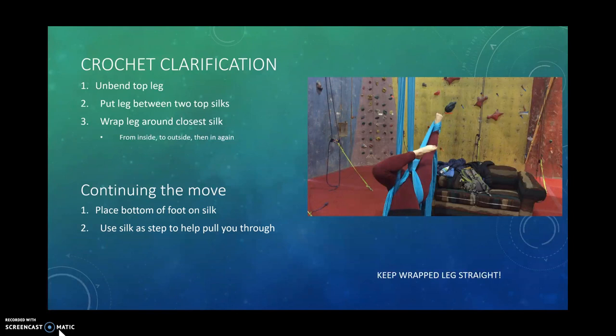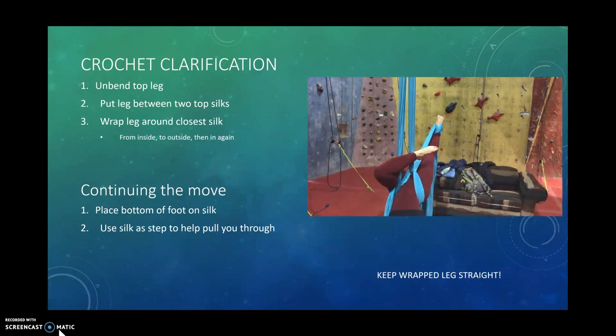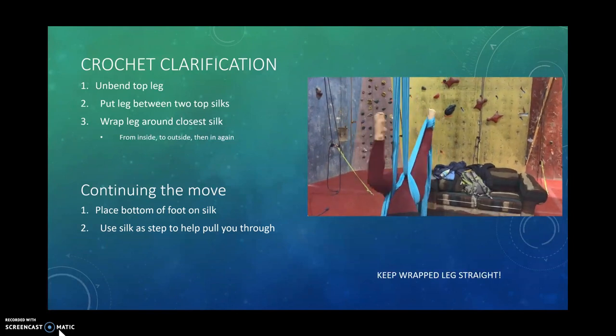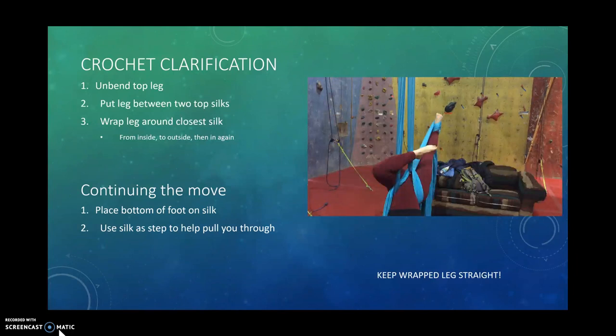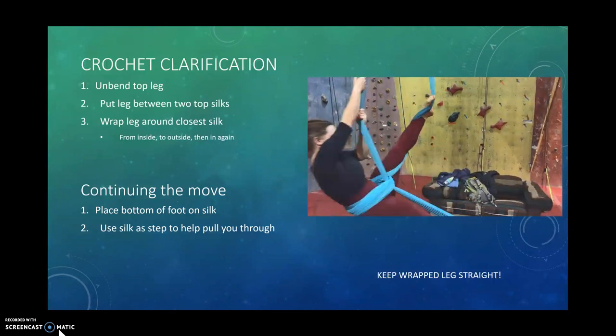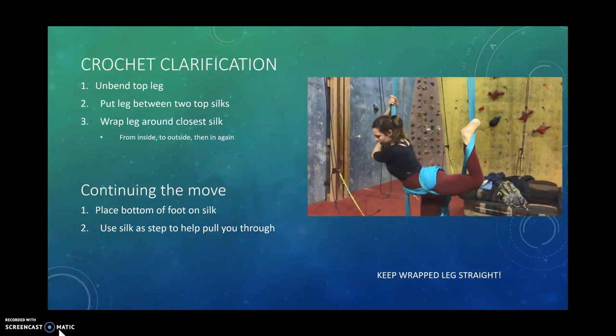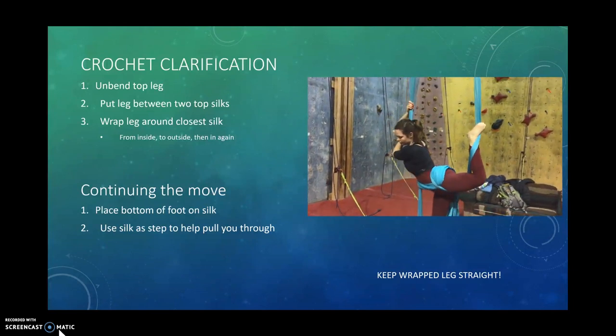For crochet clarification, you are going to unbend your top leg, put it between the two silks, and wrap it from inside, out, and up again. Continuing the move, you're going to use that as a step to pull you up and through.